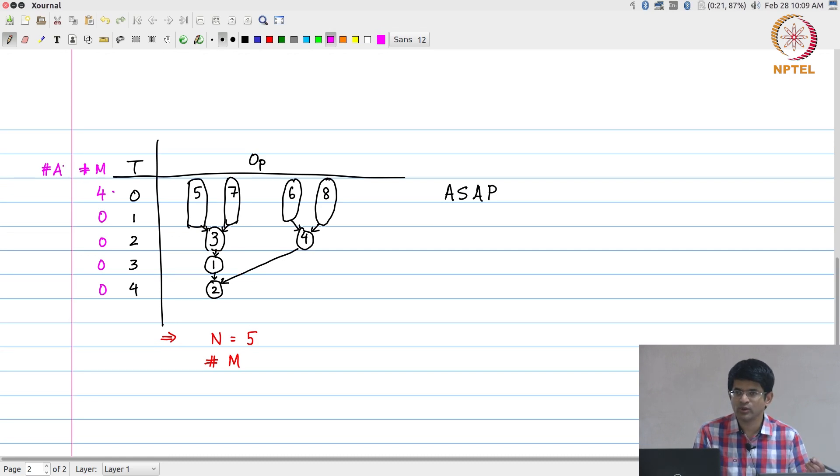What about the number of adders? In time step 0 how many additions am I doing? None. Time step 1 again none. In time step 2 I am going to end up doing how many additions? 2. In time step 3 I do 1 and in time step 4 I do 1. And if what I am interested in is the maximum of those values, which basically works out to be 2 in this case and 4 in this case. So the number of multipliers I need is equal to 4, and the number of adders that I need is equal to 2.